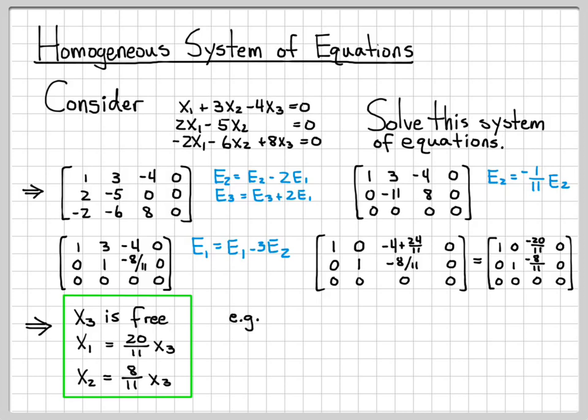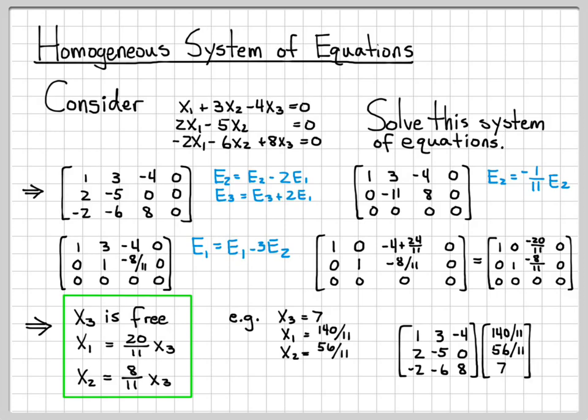It's a whole family of solutions. There's an infinite number of them. For every value of x3, we can compute x1 and x2. For example, if x3 is seven, that means x1 equals 140 over eleven and x2 equals fifty-six over eleven. If we actually plug that into the original system, our coefficient matrix times this solution in vector form does indeed equal zero.